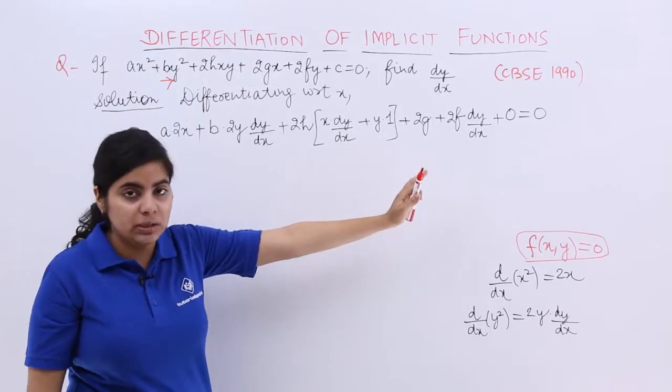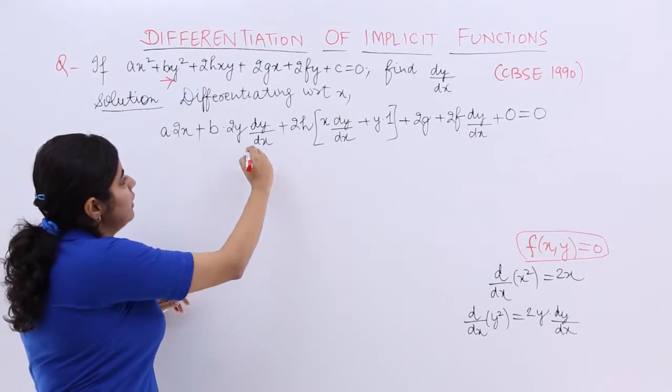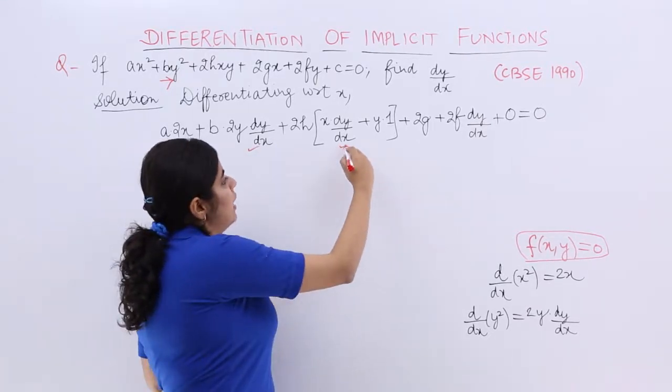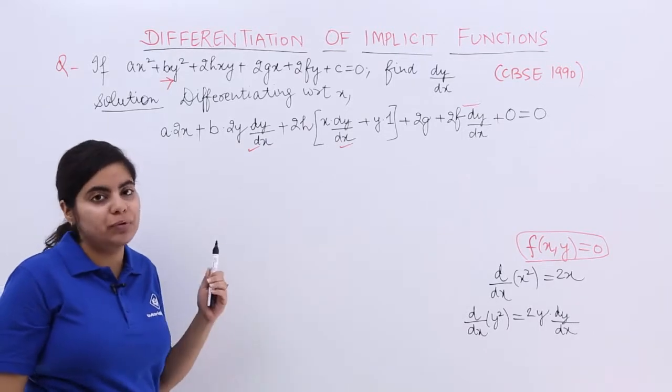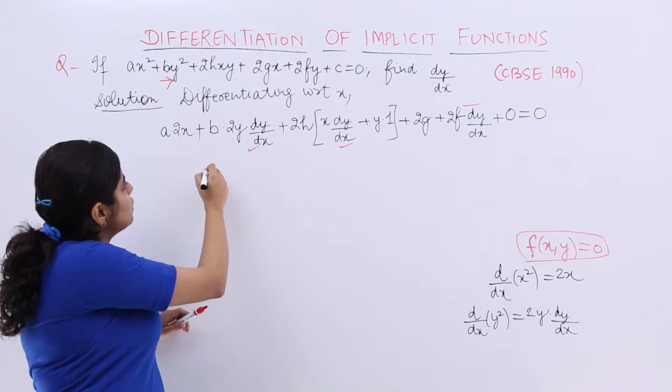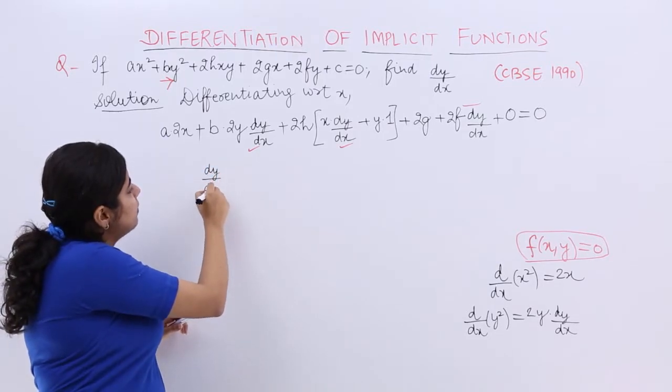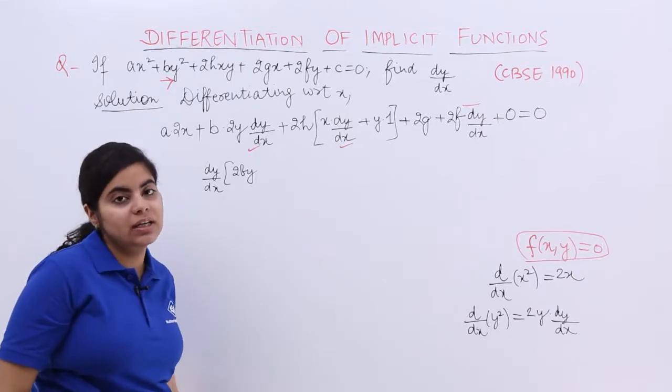Now, see wherever terms you can take something common in which all terms. So you have dy/dx here, dy/dx here, dy/dx here. These can be taken as common. From here, we can take dy/dx as common. So let us take it out as common.